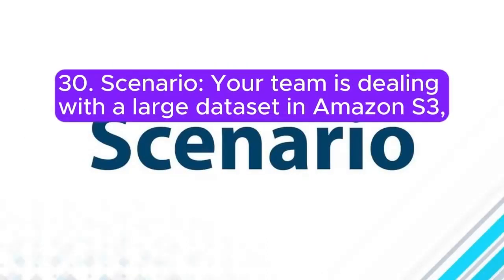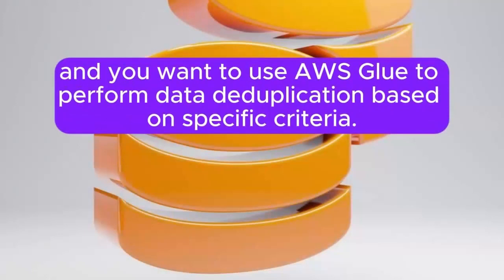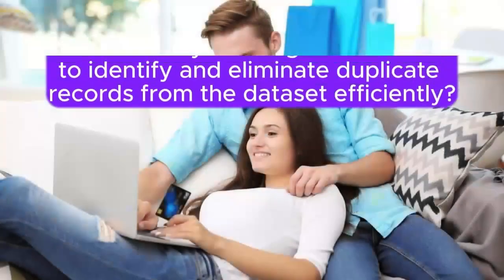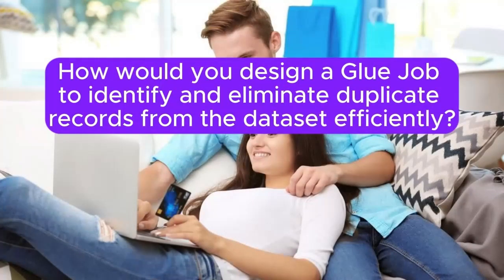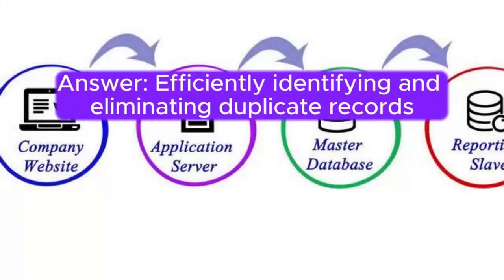Question 30: Your team is dealing with a large dataset in Amazon S3 and you want to use AWS Glue to perform data deduplication based on specific criteria. How would you design a Glue job to identify and eliminate duplicate records from the dataset efficiently?